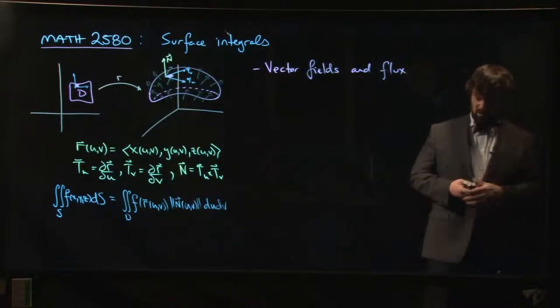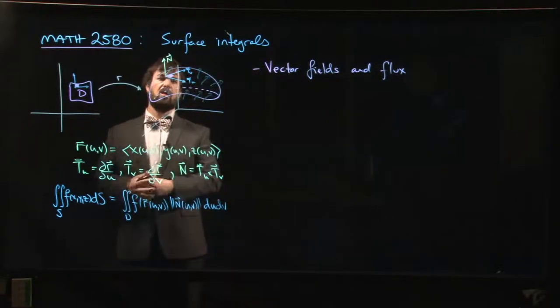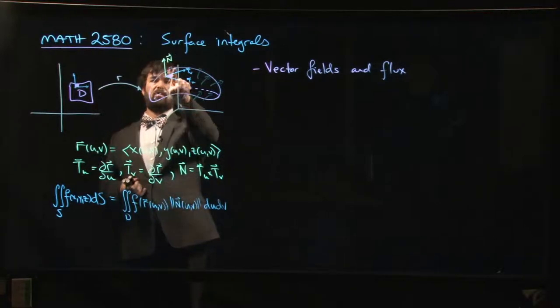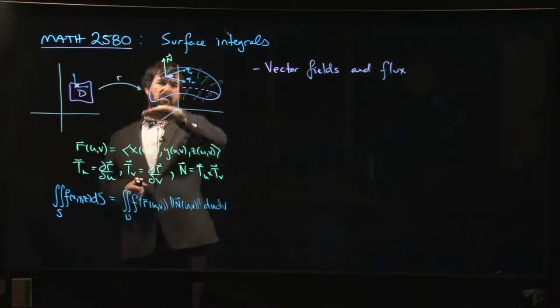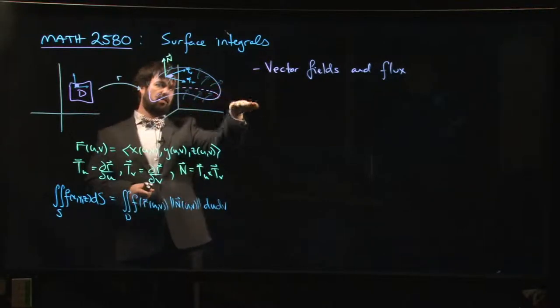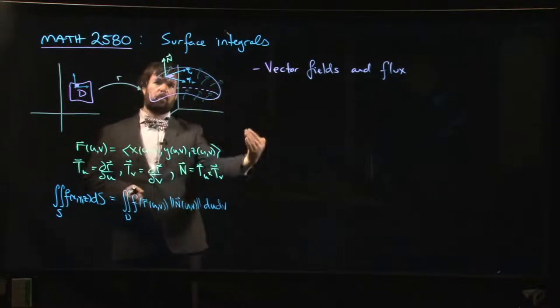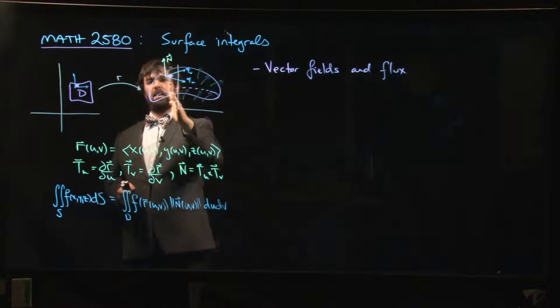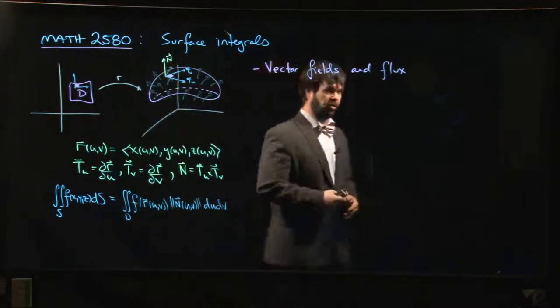The thing that matters when you're measuring flow is the normal component of each vector. If your vector is tangent to the surface, then your fluid is flowing along the surface—it's not going across. We just want to know how much of your vector field is perpendicular to the surface; that's the part that's actually going to cross.